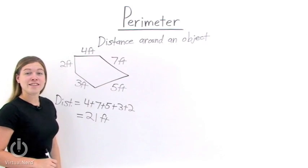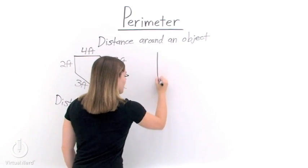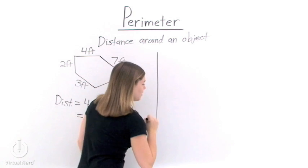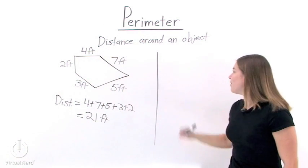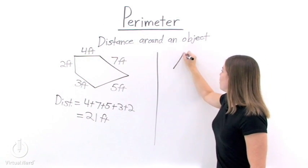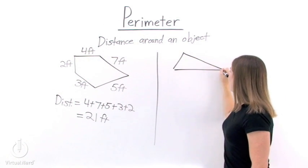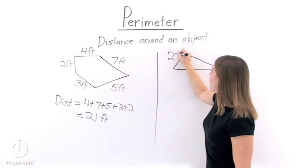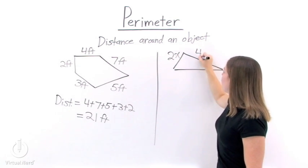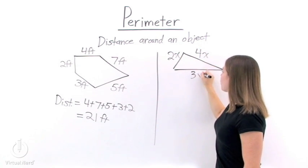Now let's take another example and find the perimeter of that object. This time, let's draw a triangle. We'll have the sides 2x, 4x, and 3y.